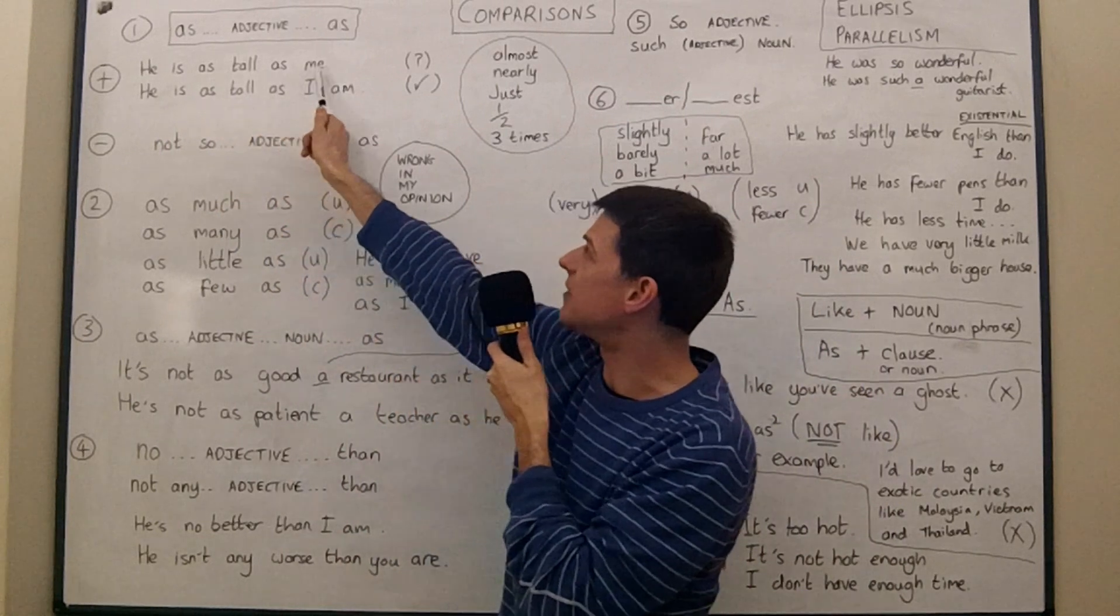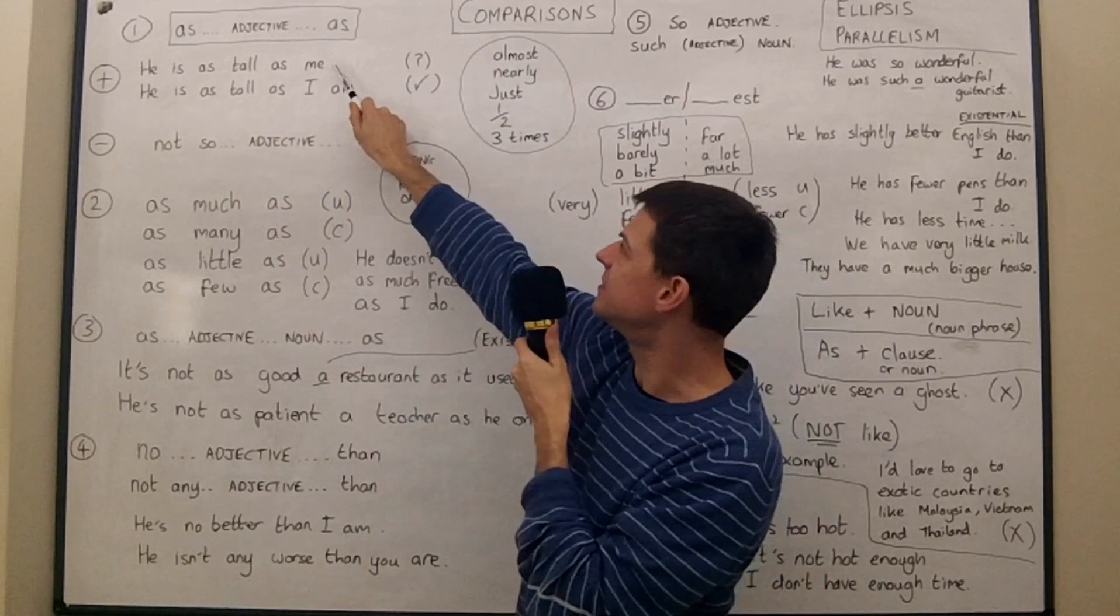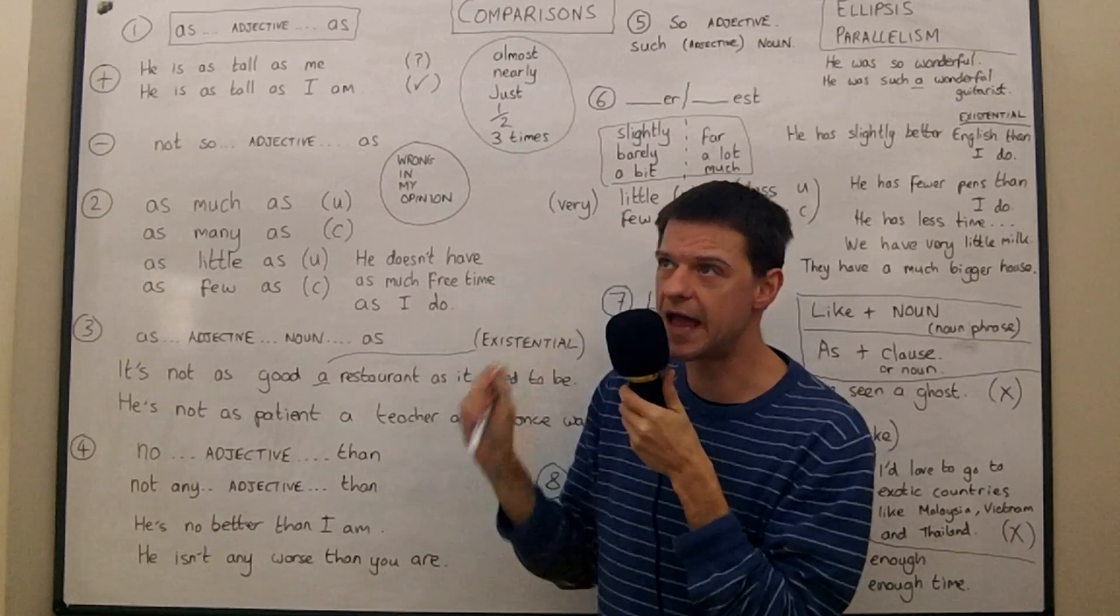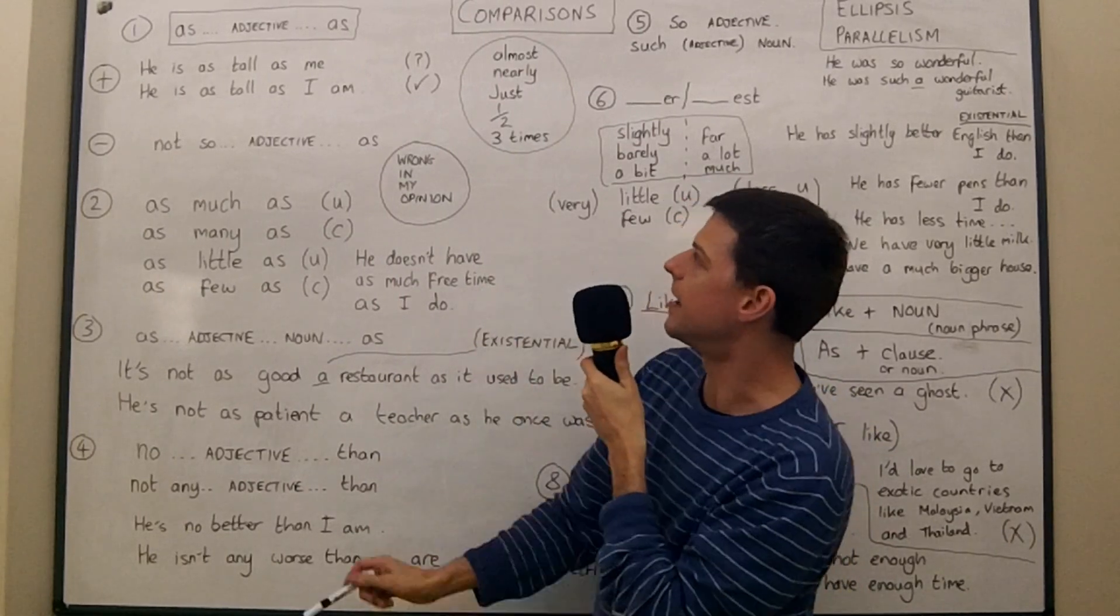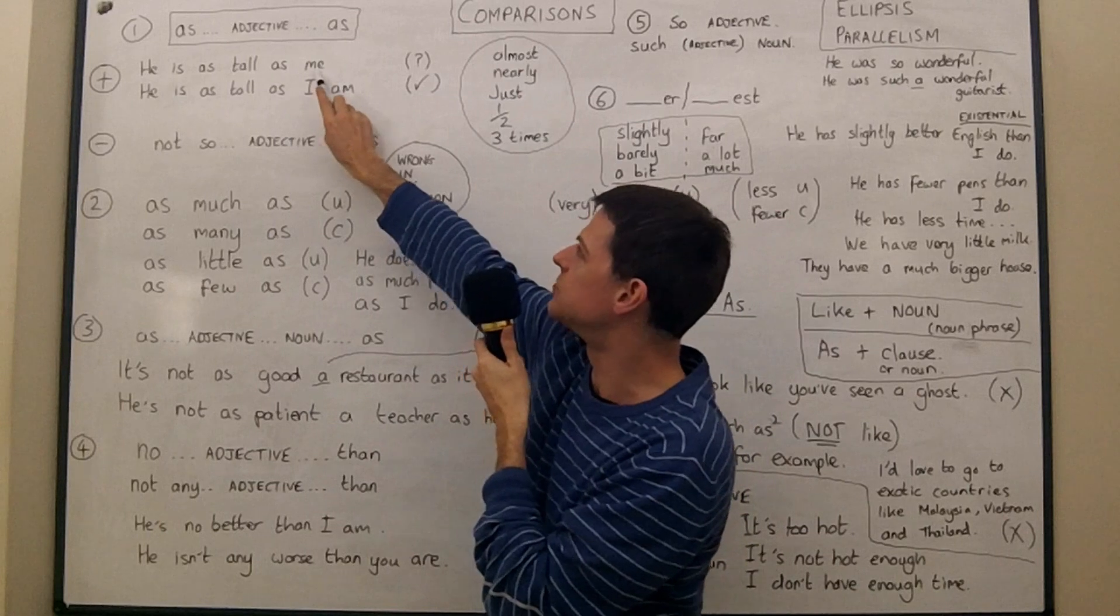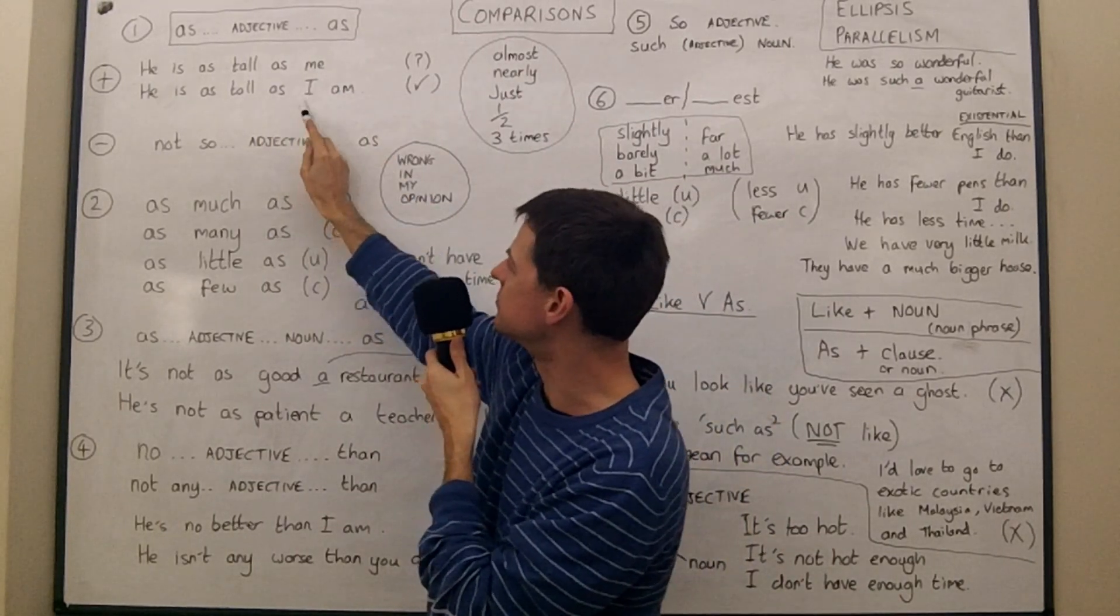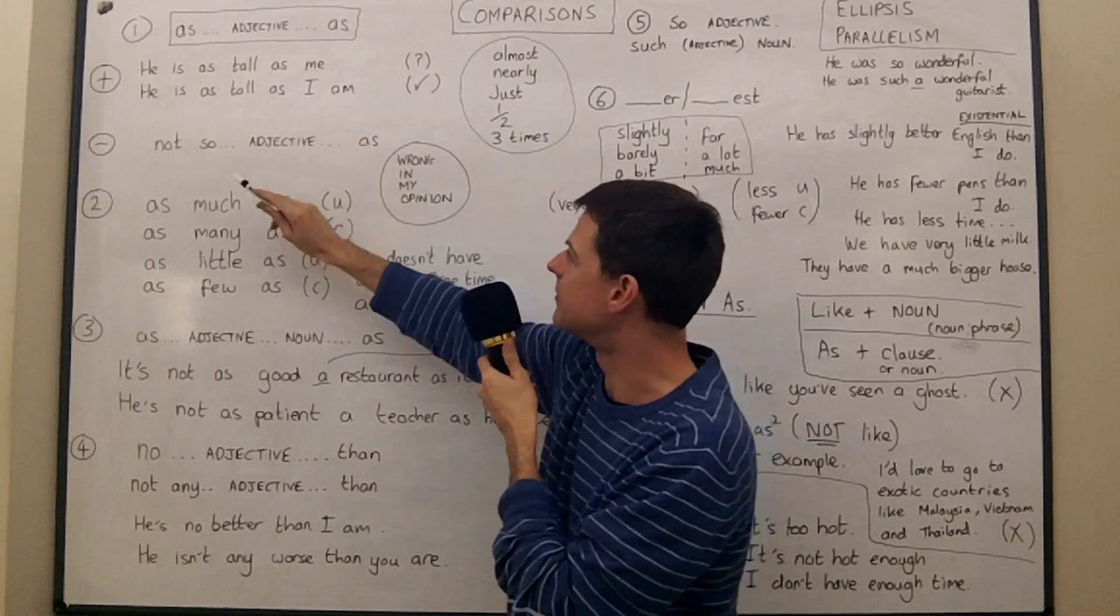So he is as tall as me. This is technically, in my opinion, incorrect, although everybody says it. And the problem is using an object pronoun here. We should actually use the subject pronoun.